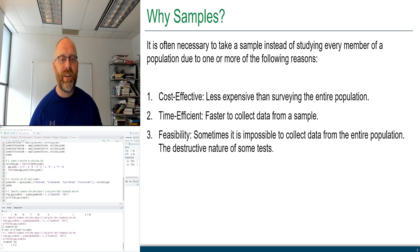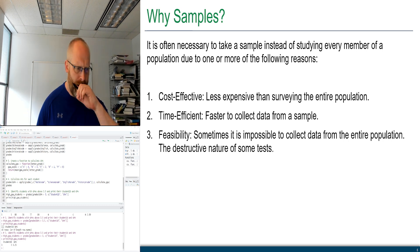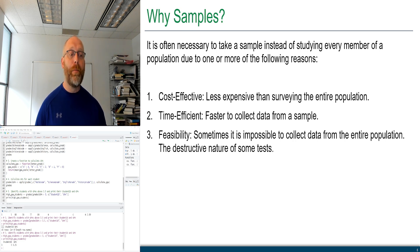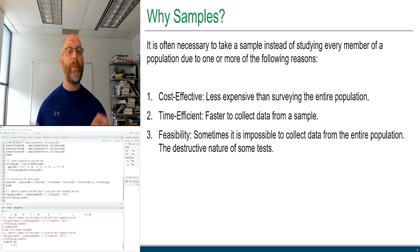An example of destructive testing: if we're testing how much stress a children's toy can withstand before it breaks, we actually have to break it. We don't want to destroy our entire production population. Taking a small sample, stressing those toys, and generalizing the result to the full population is a much better approach — this is why sampling is preferred over studying an entire population.